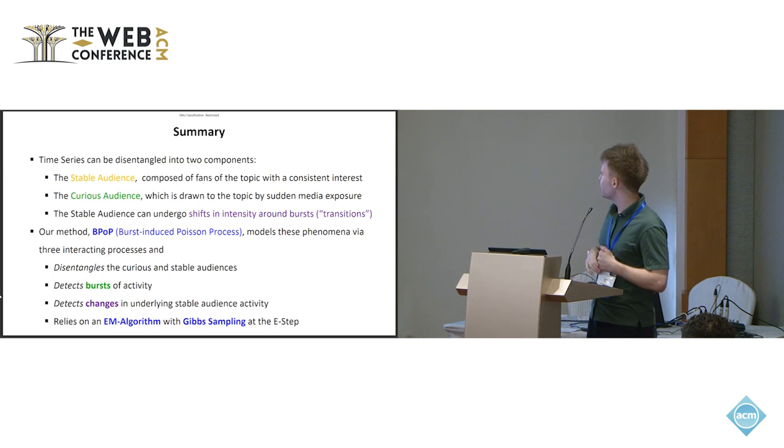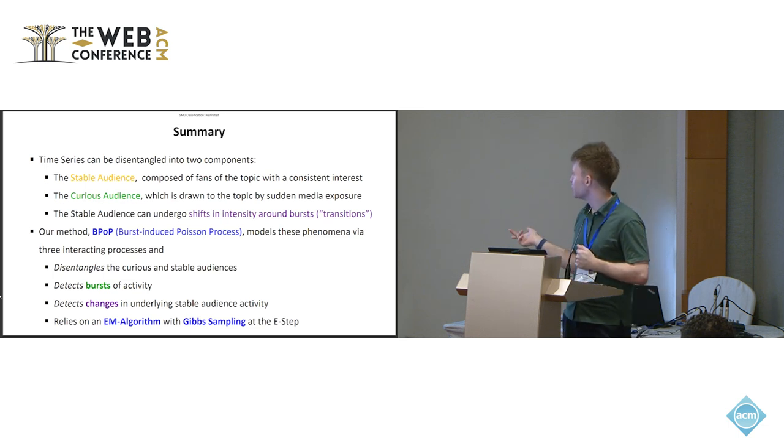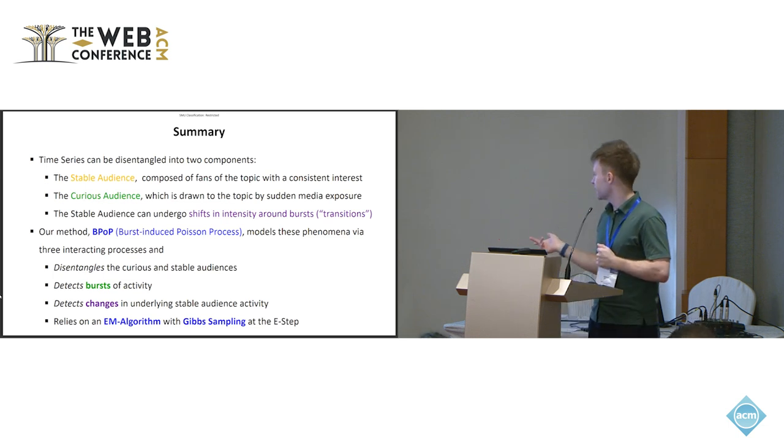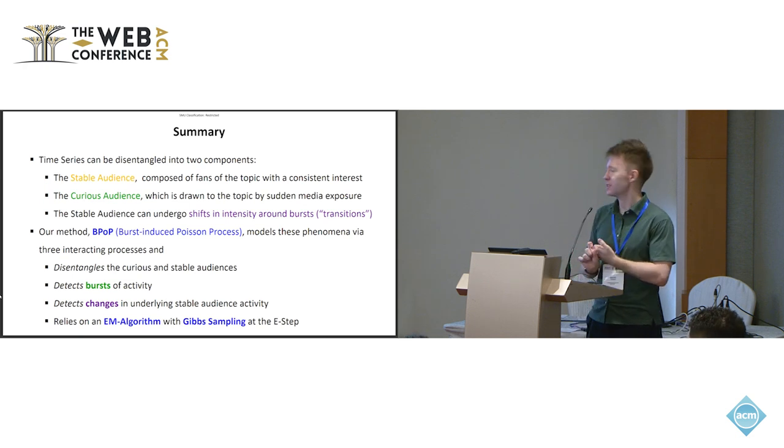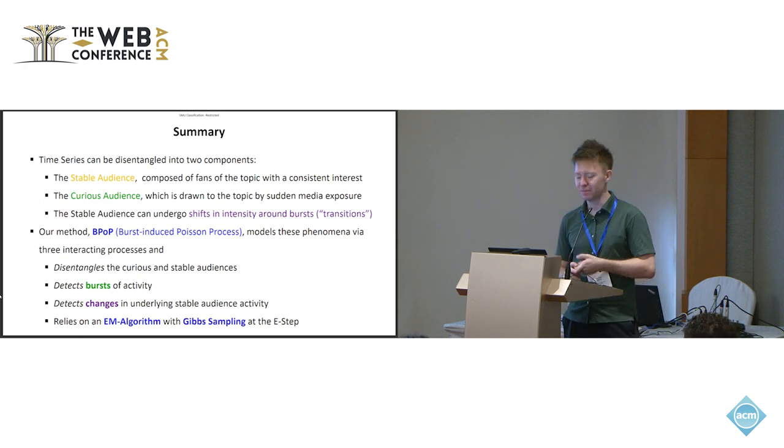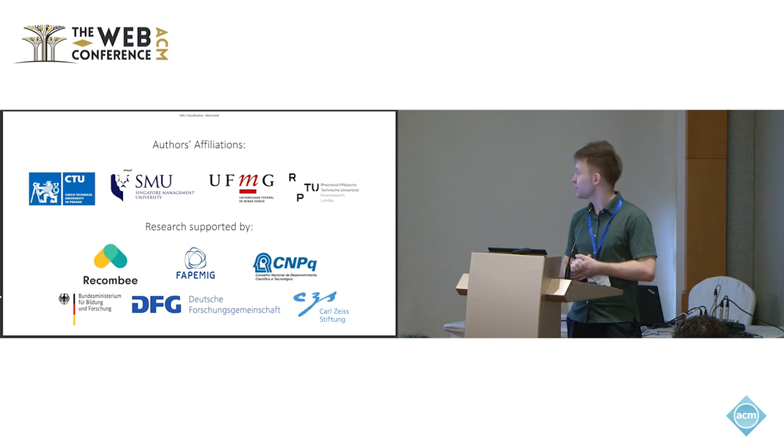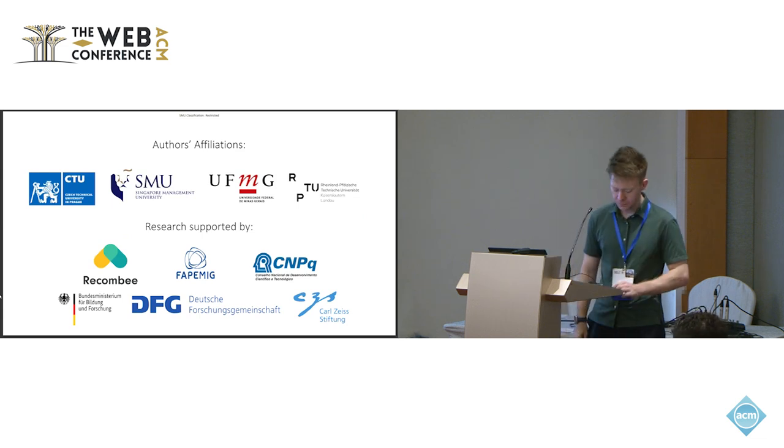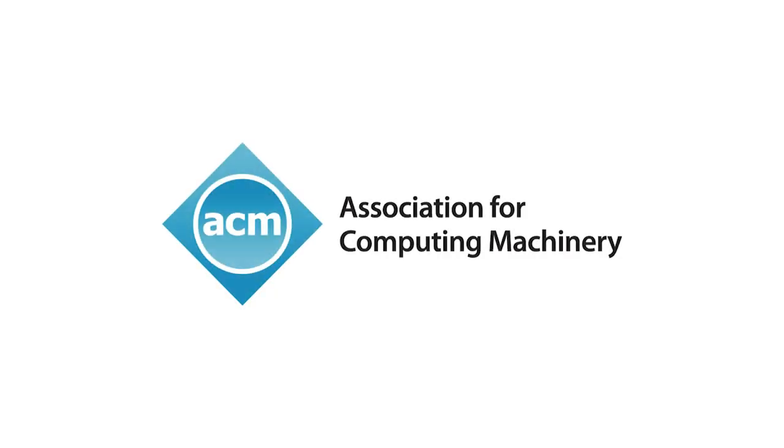So that's the summary. We can disentangle the stable audience from the curious audience, detect bursts of activity, and detect changes in the underlying stable audience activity with this EM algorithm and Gibbs sampler. So that's it for me today, and these are our affiliations. Thank you.